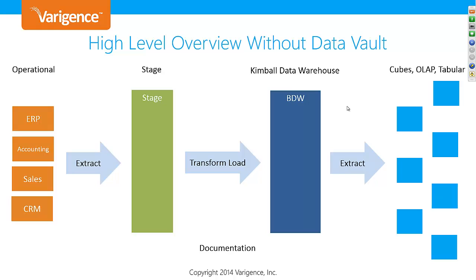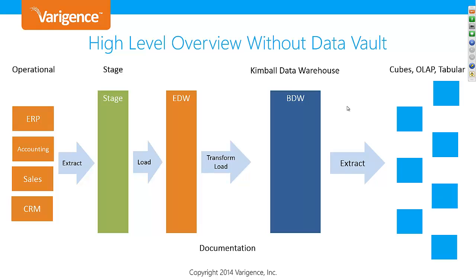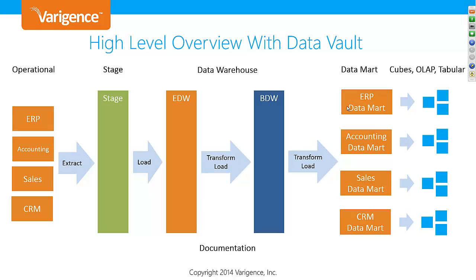So how do you apply Data Vault across the Kimball architecture? The staging environment gets separated: you extract to staging, then load your Enterprise Data Warehouse, sometimes called the Raw Data Vault. Between staging and the EDW there is only loading — no transformation happens at that layer, which is very important to understand. From the EDW you then transform and load into your Business Data Warehouse, where you apply your business rules.